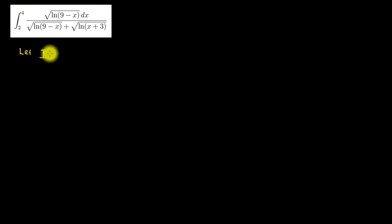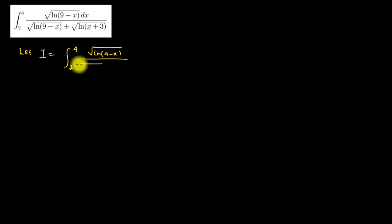Now we want to evaluate this integral using the king's property. Let I equal the integral from 2 to 4 of the square root of ln(9 − x), all divided by the square root of ln(9 − x) plus the square root of ln(3 + x), dx.